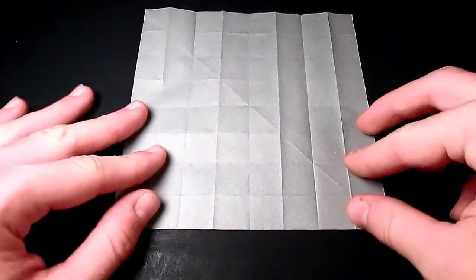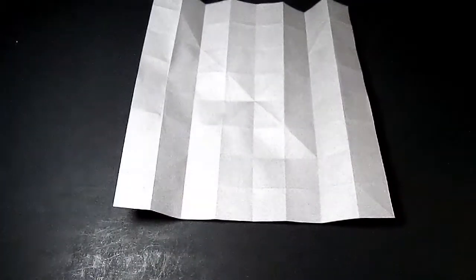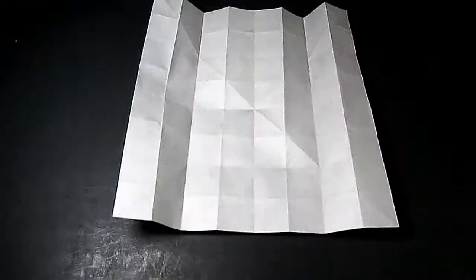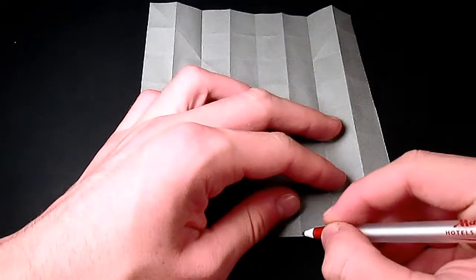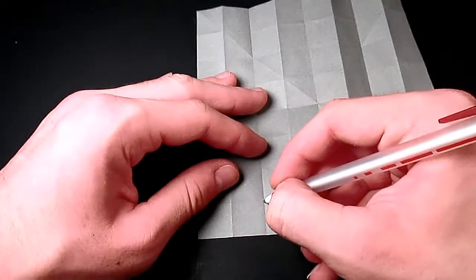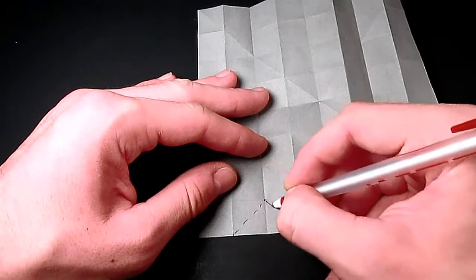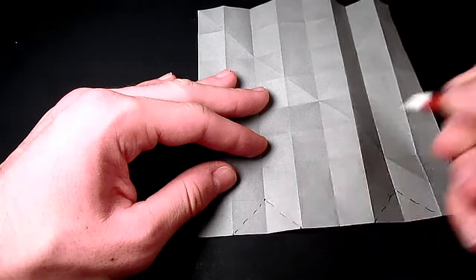Okay, so now what we're going to do is make a few more pre-creases. So what we're going to do is add valley folds right here and right here. So I'm going to mark them in with pencil so you can see them better. What we want to do is add a valley fold from this point to this point, and from this center point here to this edge here. Ready, set, let's go.